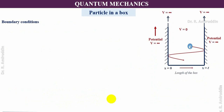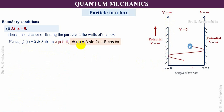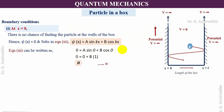Now we apply the boundary conditions. First condition: at x = 0, there is no chance of finding the electron at the wall of the box. Hence ψ(x) = 0. Substituting into equation three: 0 = A sin(0) + B cos(0). Since sin(0) = 0 and cos(0) = 1, we get B = 0 — equation number four.